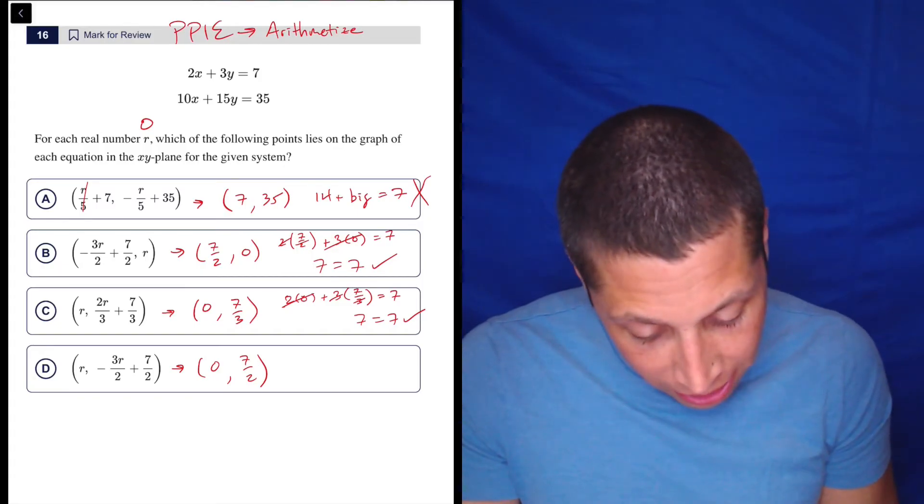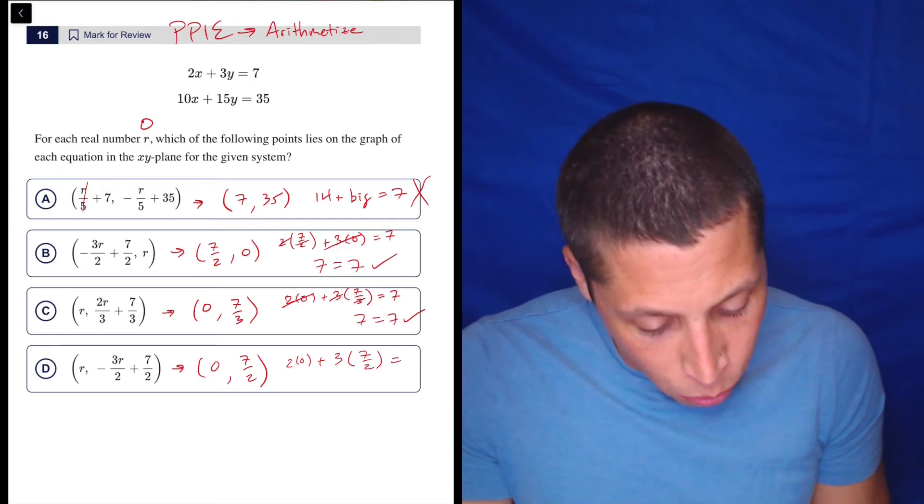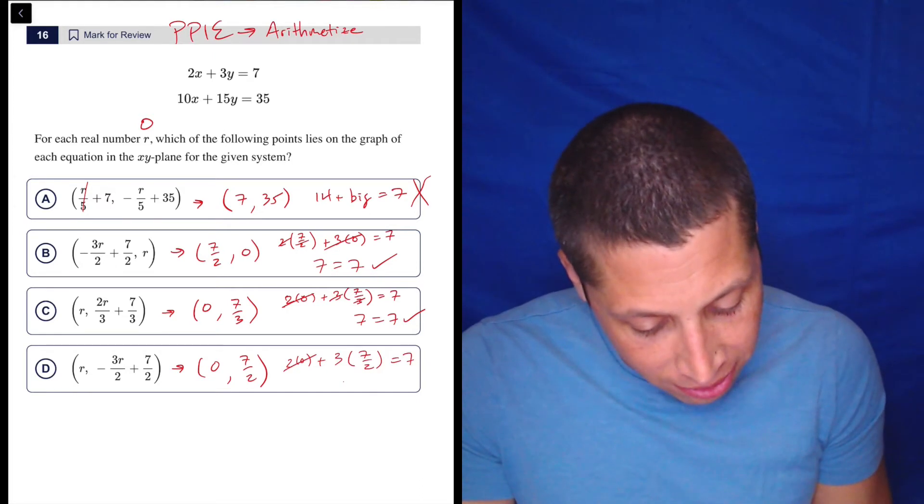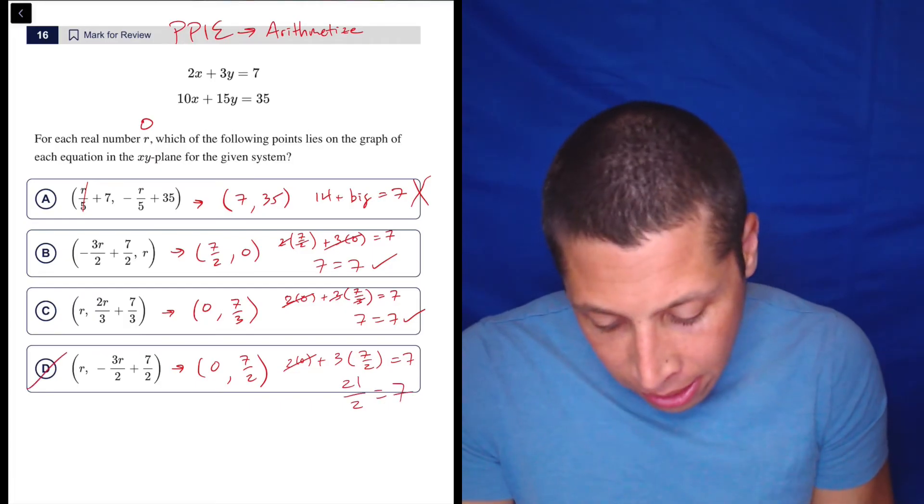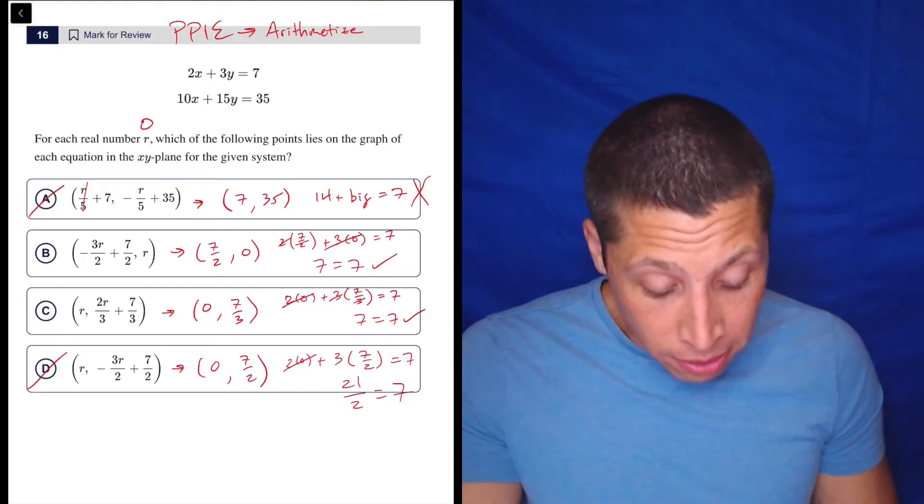Let's look at the choice D. I know that's not going to work. Two times zero plus three times seven halves. Well, this goes away, but this is going to be 21 over two equals seven. It's not. So we at least got rid of two answer choices. So from here, we can do a couple of things.